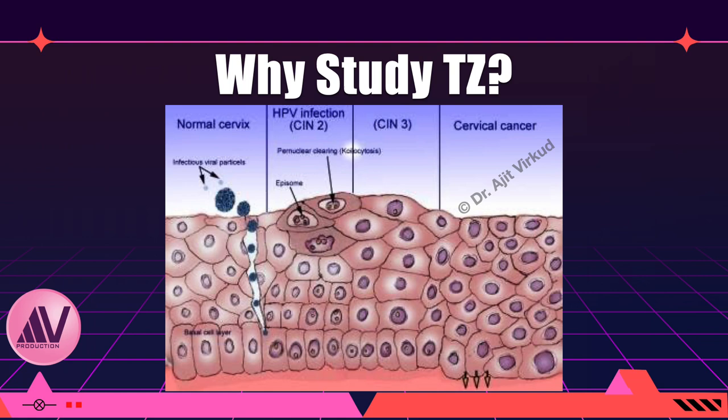Why study the transformation zone in the first place? Recent studies indicate the squamo-columnar junction to be a site of an embryonic cell population with a top-down pattern of differentiation. The reserve cells are the progeny of embryonic cells with different susceptibilities to infection by HPV and are therefore involved in malignant transformation. The transformation zone of the cervix is the site of origin of greater than 90% of precancerous lesions — also called cervical intraepithelial lesions — and cancer.